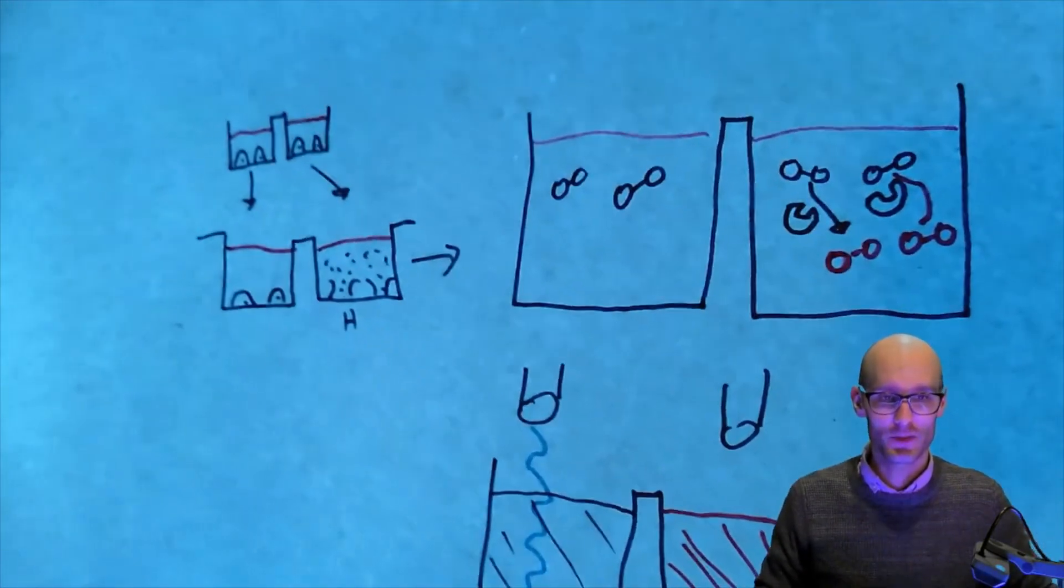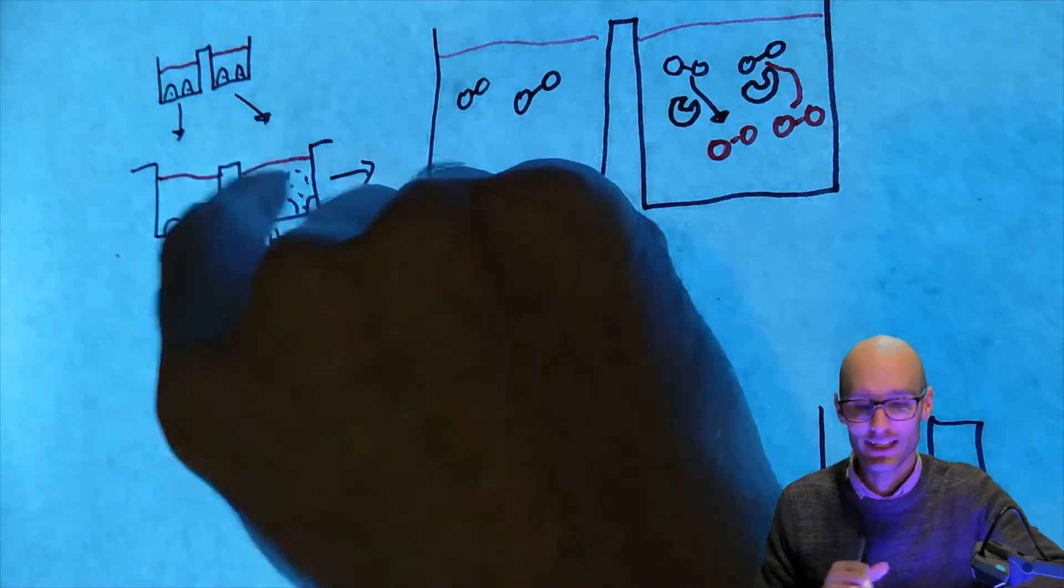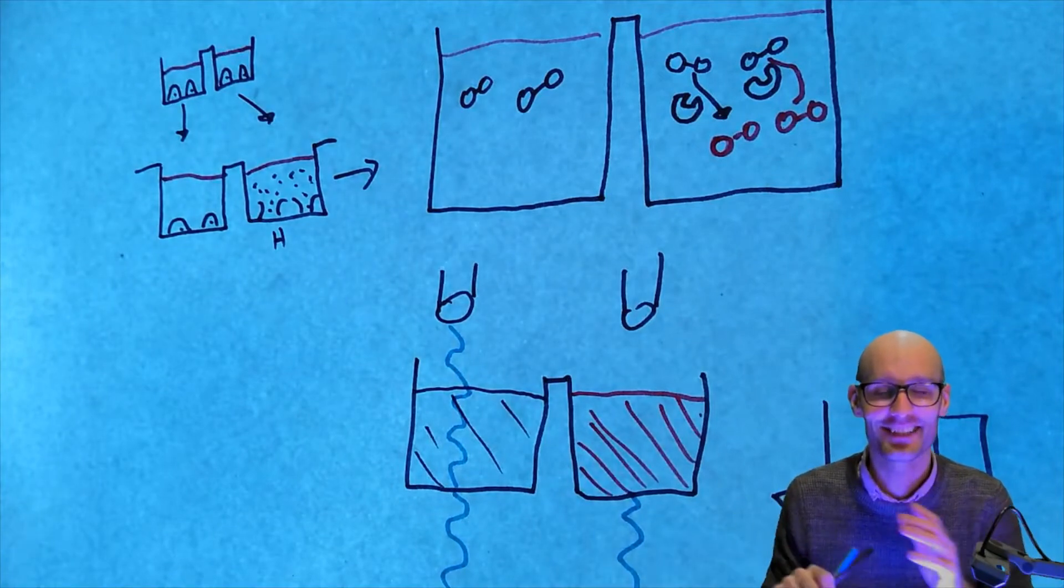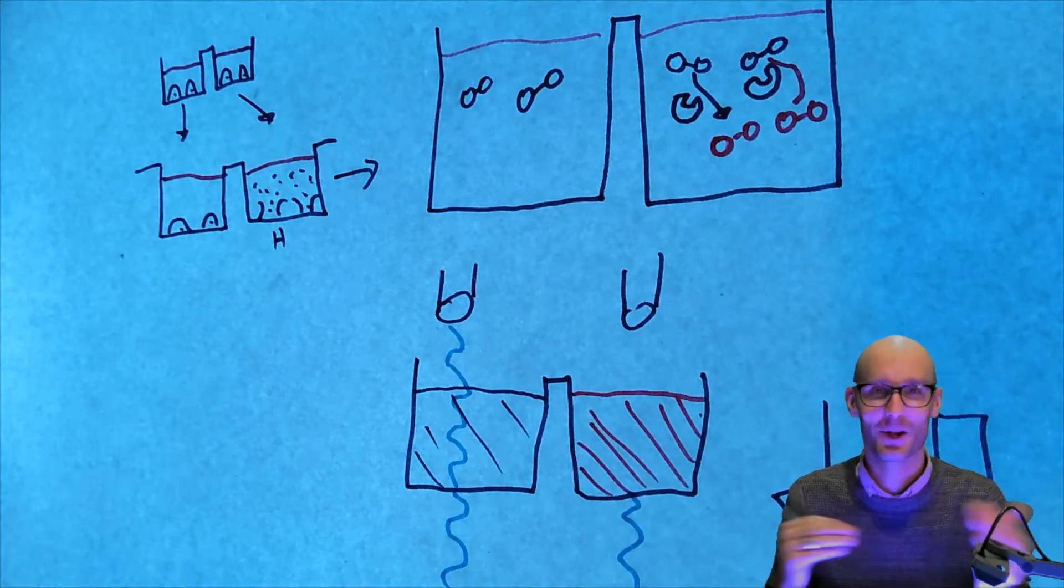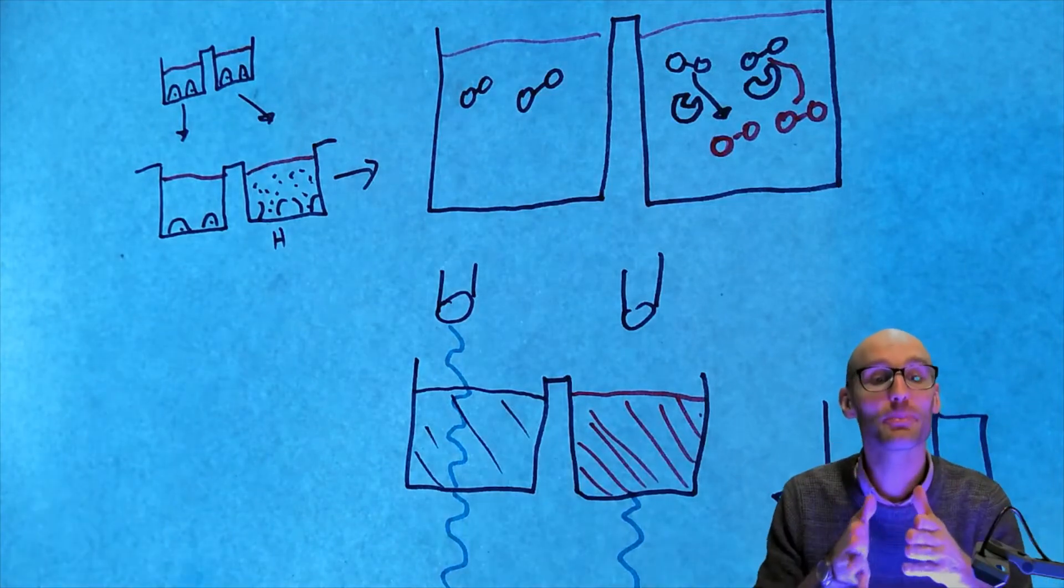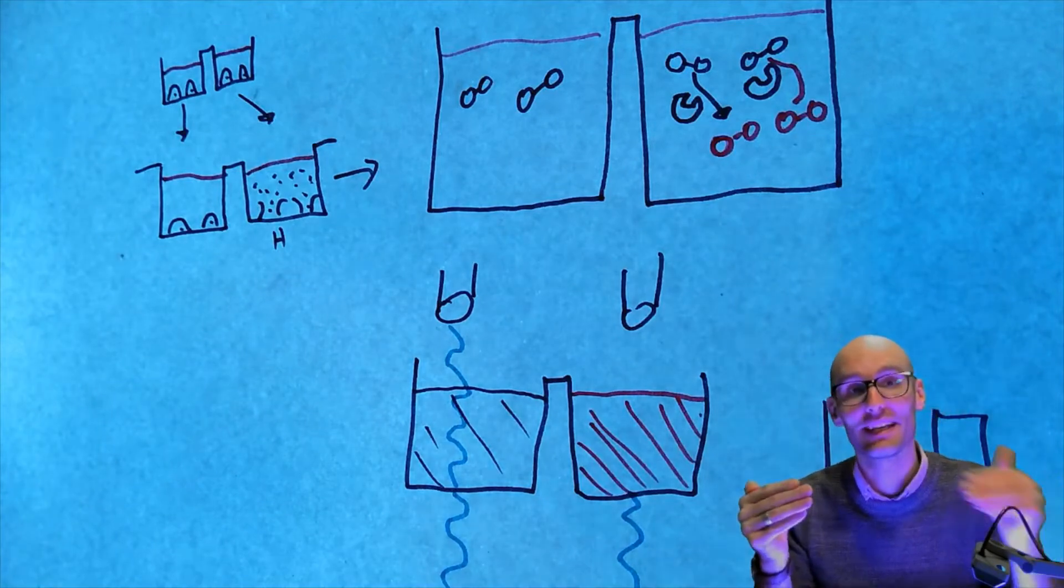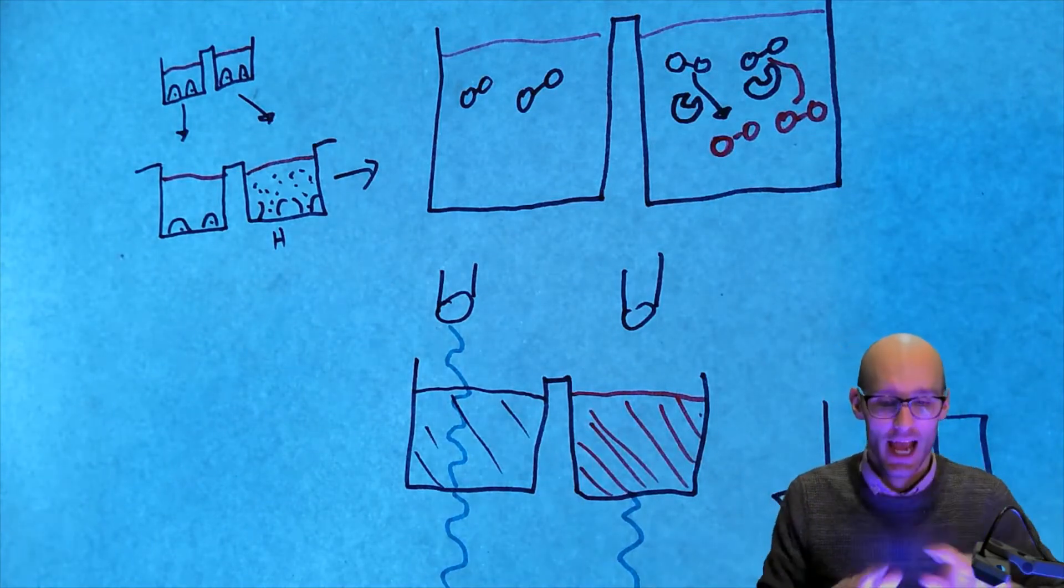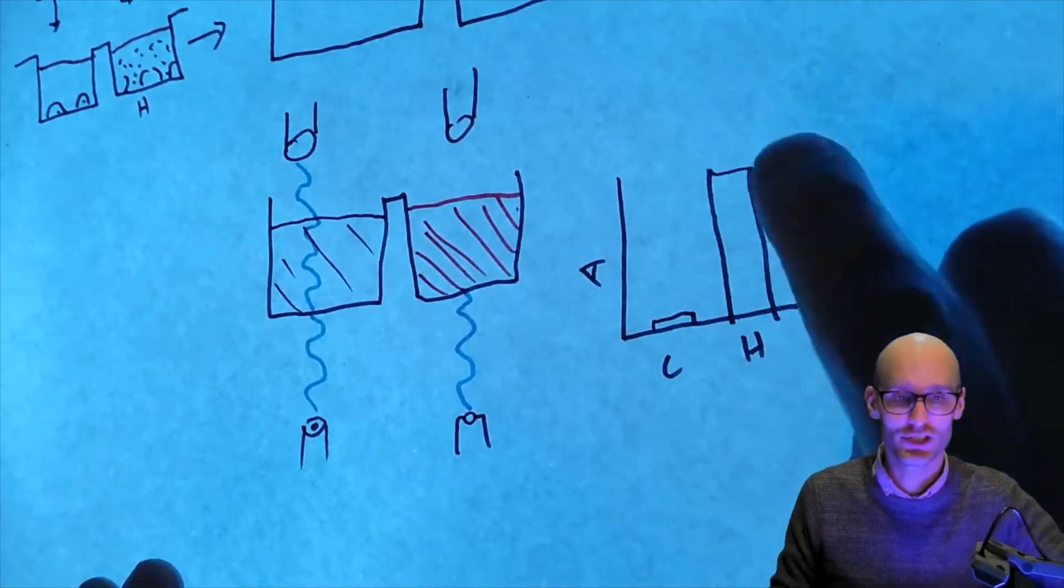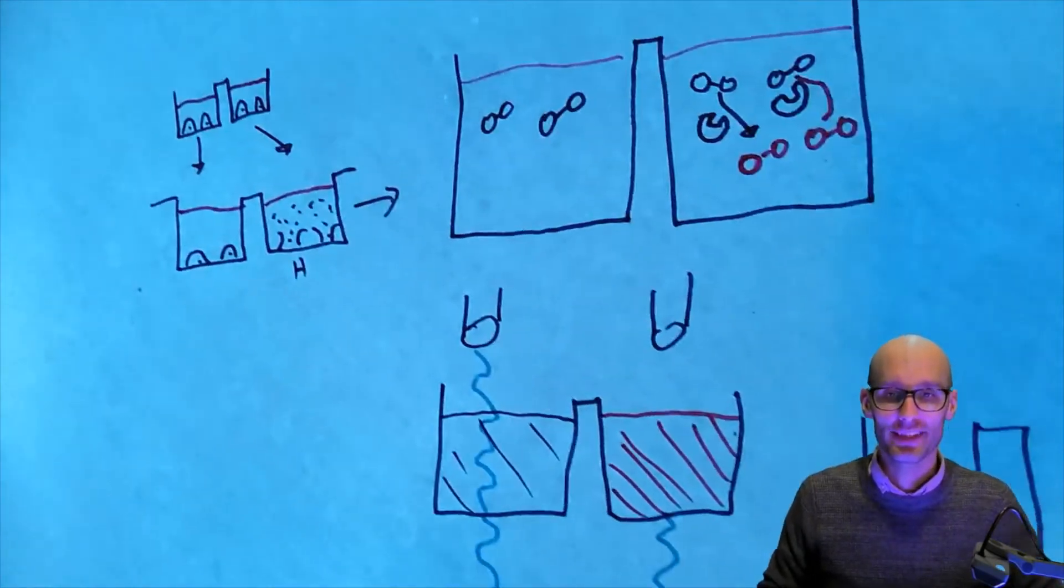Now, what we often do in these experiments is we have, what we often do in these experiments is we will intentionally lyse one of the wells using a detergent. Detergents are guaranteed to lyse cells. They disrupt membranes and disrupt the interaction between water. So, that way, we have a 100% lysis. And we can express the other wells as a percentage of 100% lysis. So, if we had a third well in there that was 100% lysis, we could then change this graph to percentage of 100% lysis. Okay? So, that's the LDH assay.